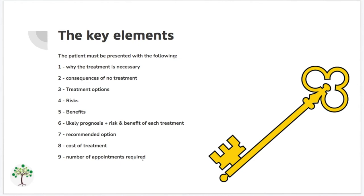The key elements are basically what really makes up a consent informed — meaning you are providing a lot of information to the patient in regards to the treatment you're proposing. This includes: why the treatment is necessary, the consequence of no treatment, treatment options and what sort of options are available to rectify the issue identified, each risk associated with each treatment, its benefits, likely prognosis, and also risks and benefits of each individual treatment. You may also provide a recommended option, the cost of each treatment, and how much time and the number of appointments it will take to complete.